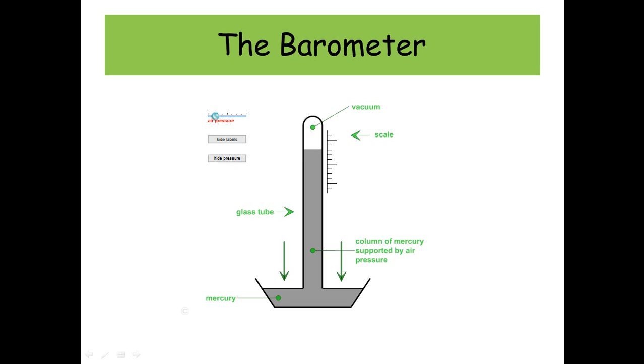If the air pressure increases, the force on the liquid and the mercury there, well that increases and that forces more mercury up the tube. And there's a vacuum at the very top, and you just read off a scale and that will tell you the pressure, or the atmospheric pressure.